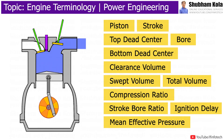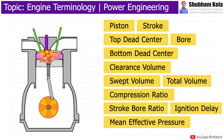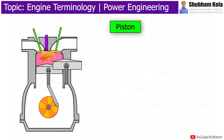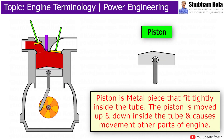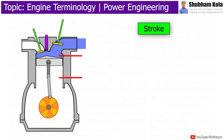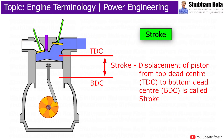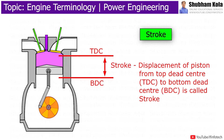In this video, we are going to learn about basic definitions used in engine technology. First is the piston, which is a metal piece that is fit tightly inside the tube. The piston is moved up and down, and the displacement of the piston from top dead center to bottom dead center is called a stroke.